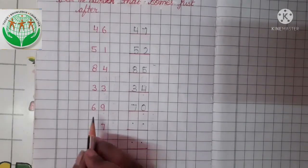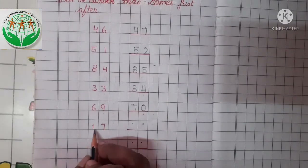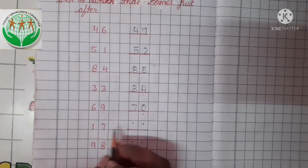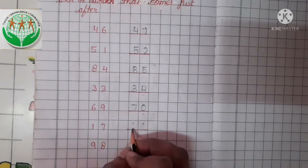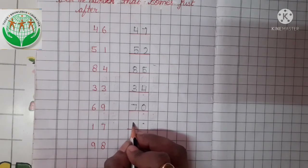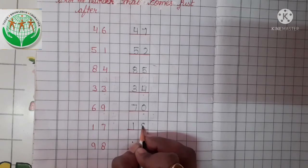Now the next one is number 17. Now tell me, what comes just after 17? 17 ke after kya aega? Tell me. Yes, number 18.